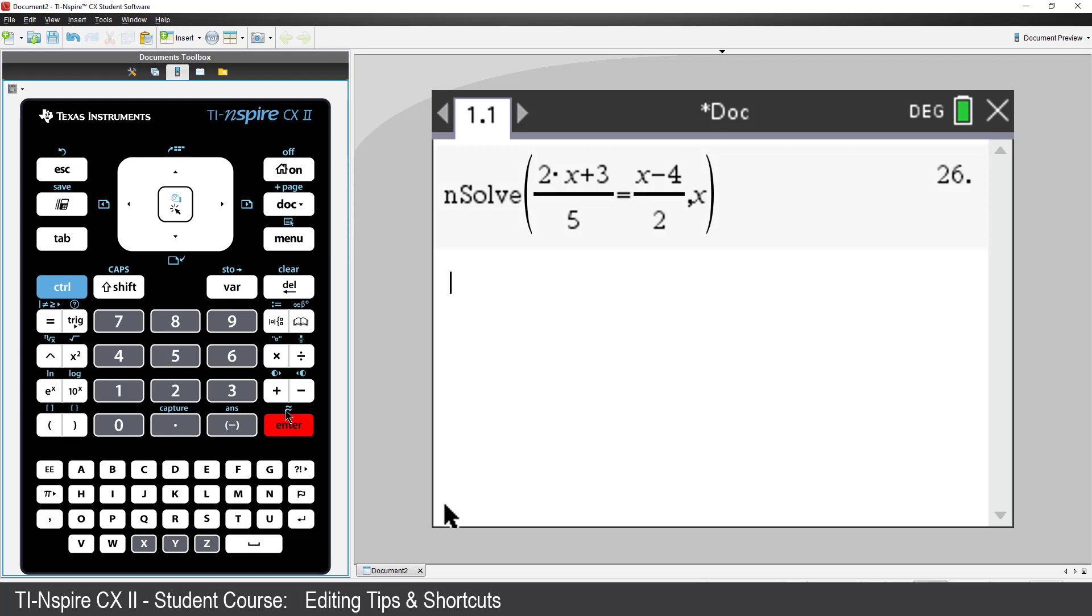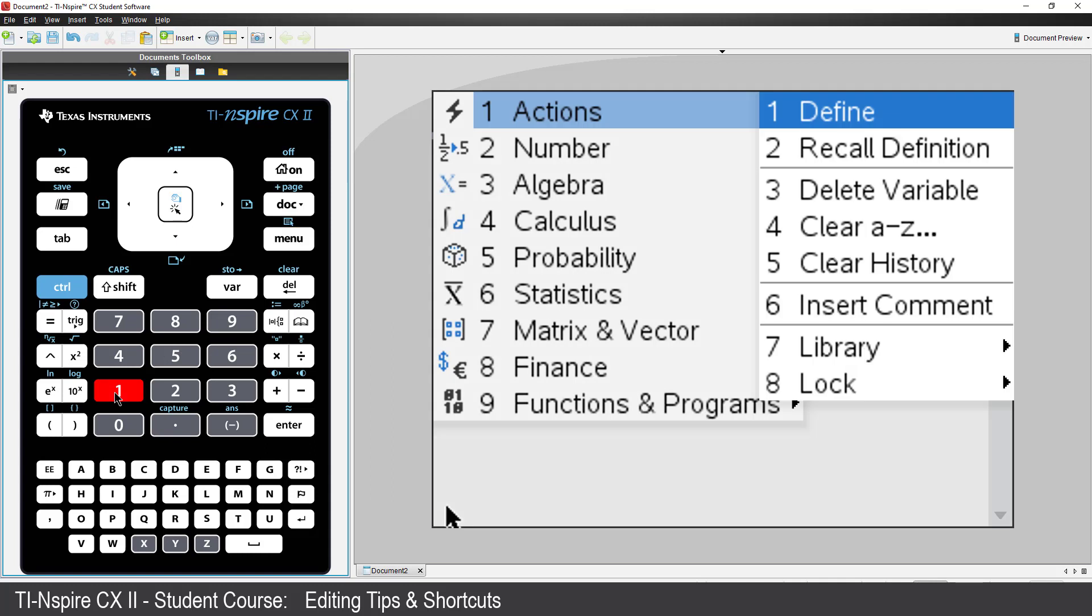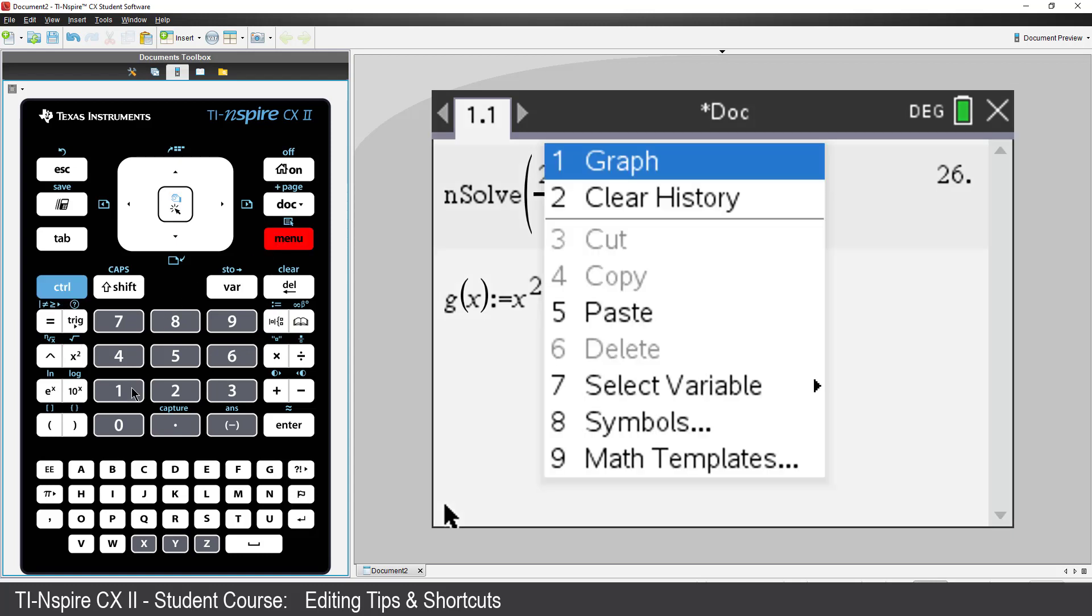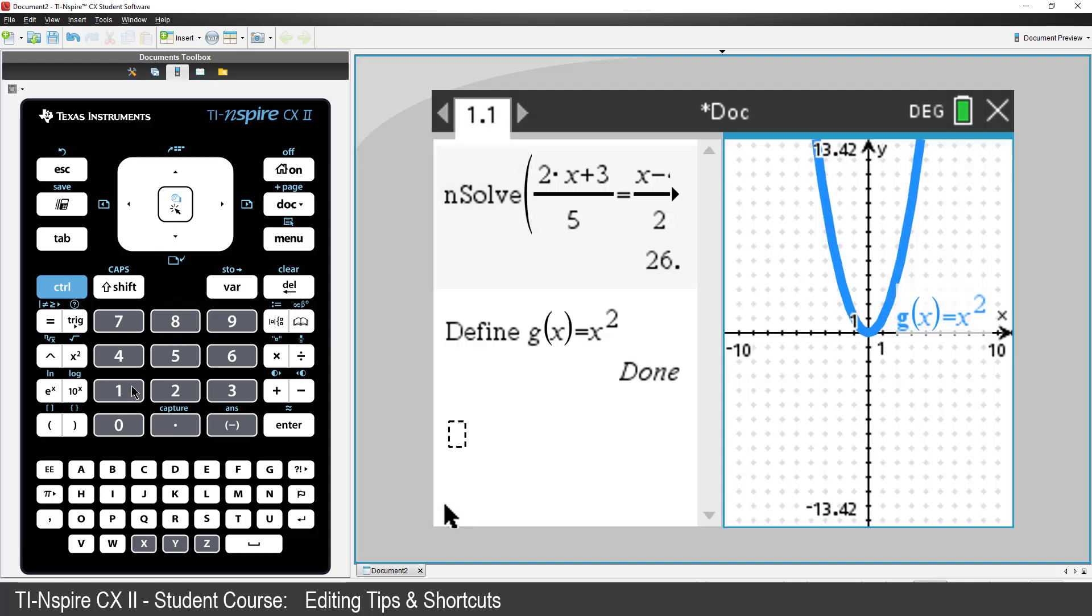Let's try a different type of equation. I'll define G of X equal to X squared. I could use the Menu and navigate to Define, or use the Assigned Equals key by pressing CTRL followed by the Math template. Before I press Enter, try pressing CTRL and Menu again. Now I have the option to graph the function. Just press Enter.